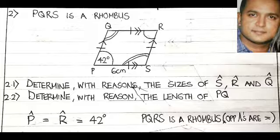From all the information we have on the diagram, we are able to see that angle P is equal to angle R, which is equal to 42 degrees. Our reason is that PQRS is a rhombus because opposite angles are equal.